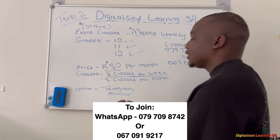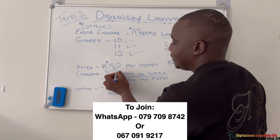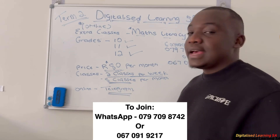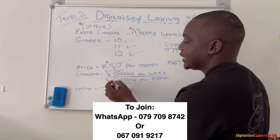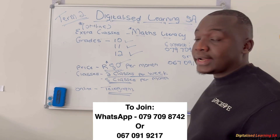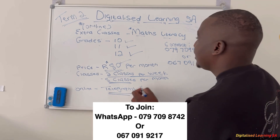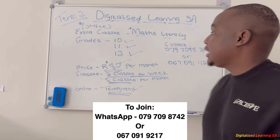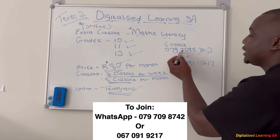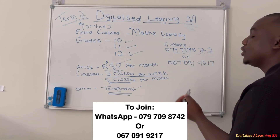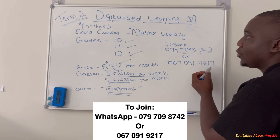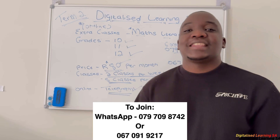If you are attending two times per week, it means that in a month you will attend eight times. Remember, the 80 rands means you will attend eight times in a month, and we conduct our classes online on Telegram. To join, you can contact 079 709 8742 or 067 091 9217. Goodbye guys, and see you in class!